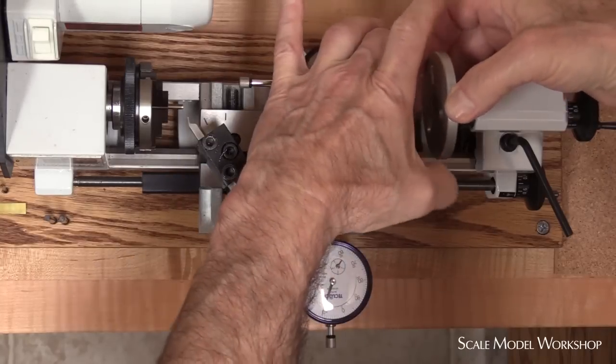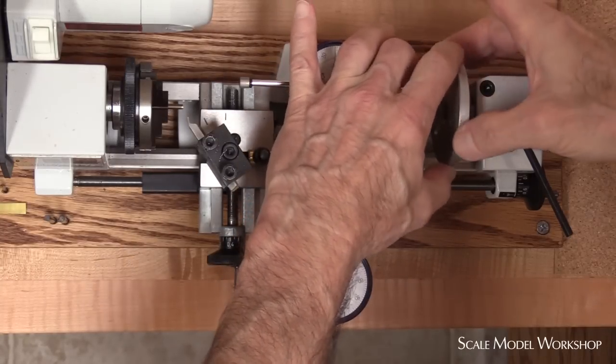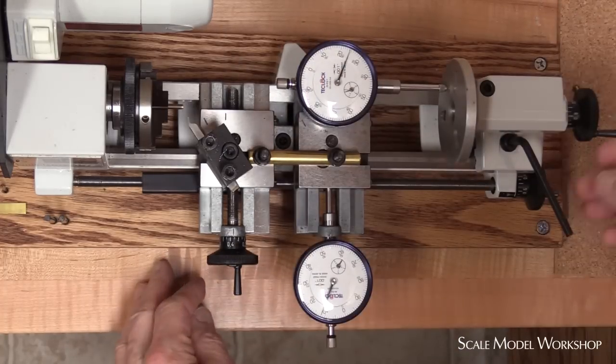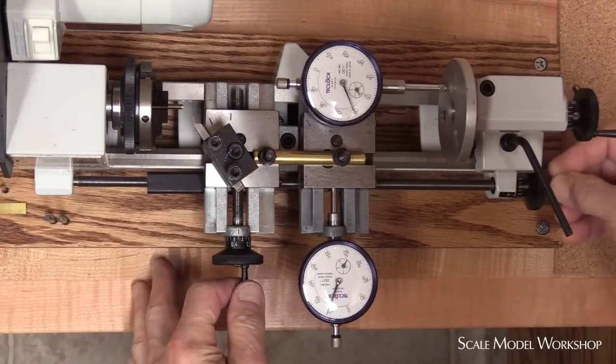I use a faceplate mounted to the tailstock as a stop for the longitudinal dial indicator. The unit can be easily installed on either lathe whenever I need it.